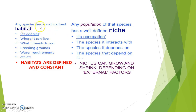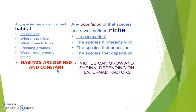Any species has a well-defined habitat. Habitat, as I already told you, is the address — where it can live, what it needs to eat, all the breeding grounds, water requirements, and so many other factors. Habitats are defined and constant; they are a particularly defined area and they remain constant.